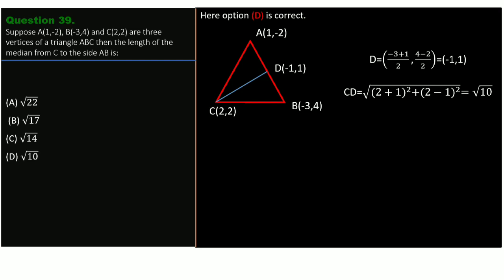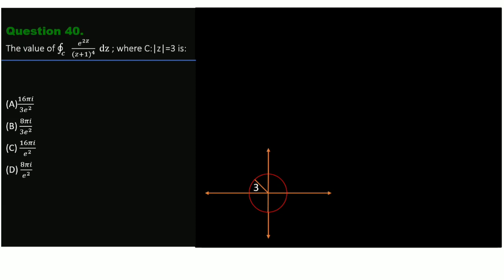Now come to question 40. We have to find the value of a contour integral where C is given by |z| = 3. Options are: A) 6πi/3e², B) 8πi/3e², C) 16πi/e², D) 8πi/e². Note that |z| = 3 represents a circle with center at origin and radius 3, as given by the figure.